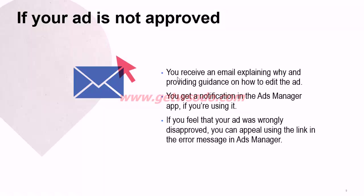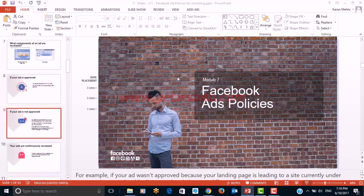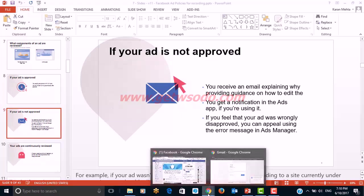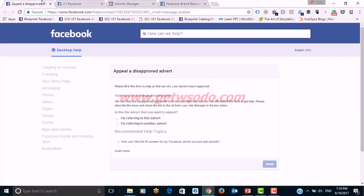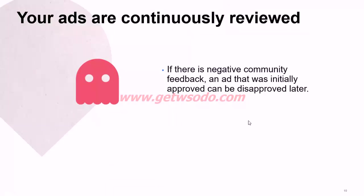If your ad is not approved, you will receive a notification and an email explaining why it was disapproved, along with guidance on how to edit the ad. You will also get a notification in your Ads Manager. If you think your ad was wrongly disapproved, there will be a link provided where you can file a report. Also, your ads are continuously reviewed — even an approved ad can be disapproved later if, for example, it receives a lot of negative feedback from the community.